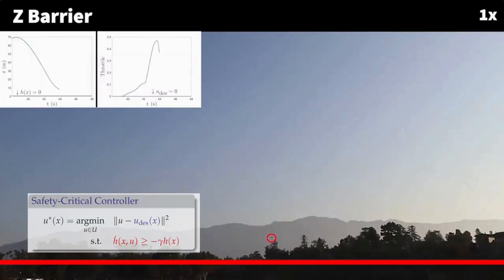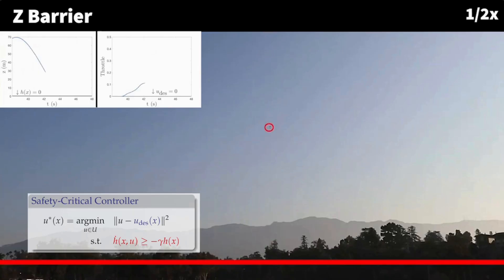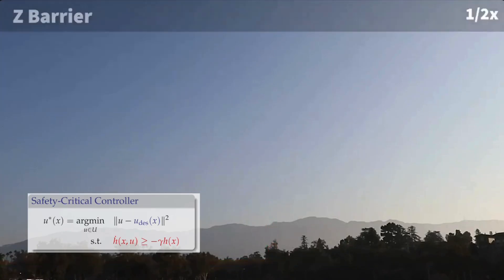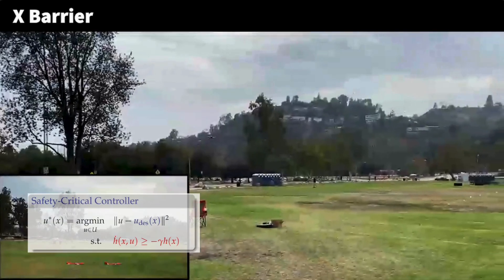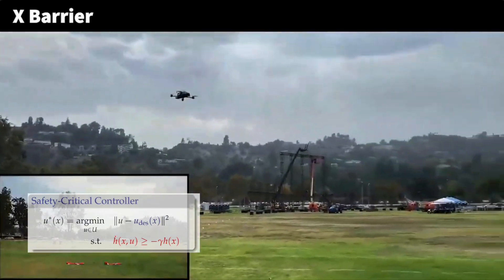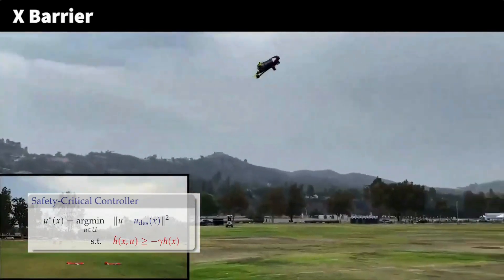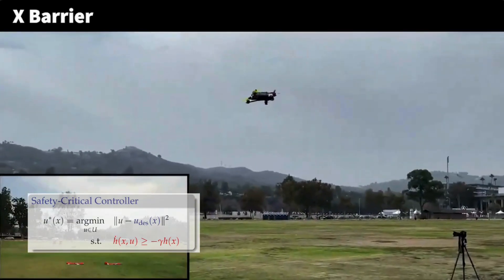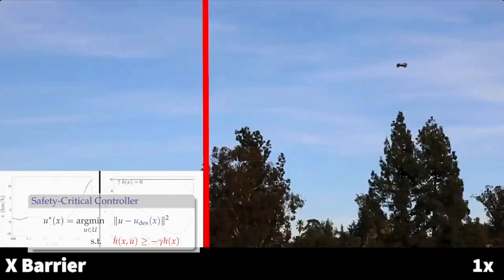In this final illustration of the math, we show how this scales to much higher speeds. The drone here free falls from 70 meters above the ground before the safety filter catches it. It's also able to enforce collision avoidance constraints at speeds above 100 kilometers an hour, as shown later in this video.